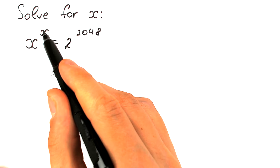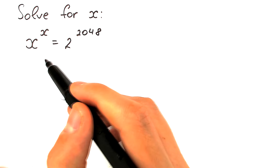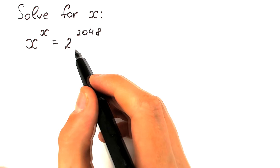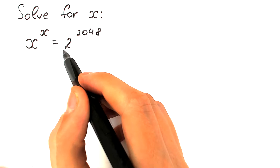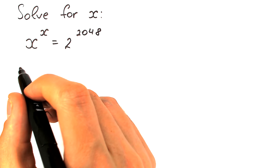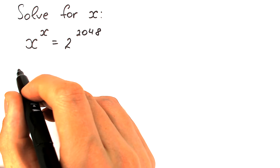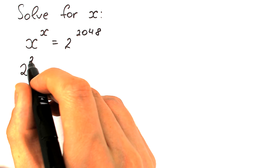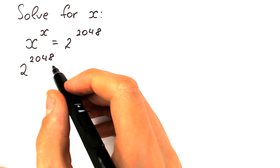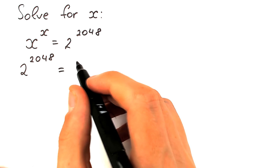Same base and same exponent on the left, and once we have same base and same exponent on the right, we can easily solve this question. But first we should create the same base and same exponent from the right-hand side. So let's try to write this expression in another way — not simplify, but rewrite it. We have 2 to the power 2048, and here is a really great trick: let's write 2048 as 2 times 1024.